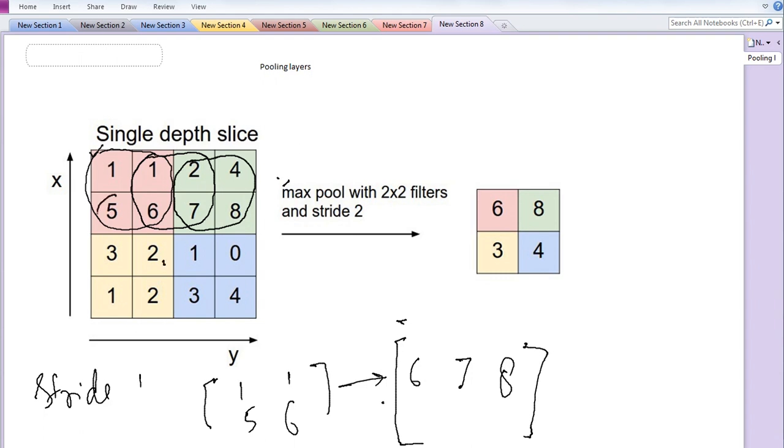If you move downwards in the matrix, you get the maximum value as 6. Then you move one more ahead down and the maximum value will be 3. Likewise, you can get these values as well.